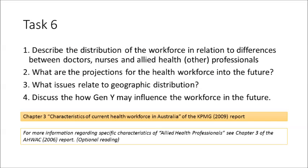For Task 6, read Chapter 3, Characteristics of Current Health Workforce in Australia, from the KPMG report, and answer the following questions. One, describe the distribution of the workforce in relation to differences between doctors, nurses and allied health or other professionals. Two, what are the projections for the health workforce into the future? Three, what issues regulate the geographic distribution? And four, discuss how Generation Y may influence the workforce in the future. For more information regarding specific characteristics of allied health professionals, have a look at Chapter 3 of the AHWAC 2006 report, which is optional extra reading.